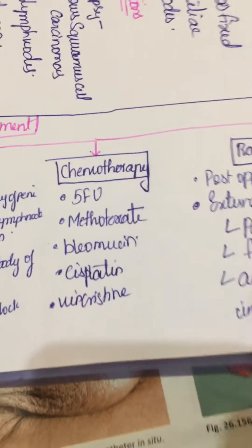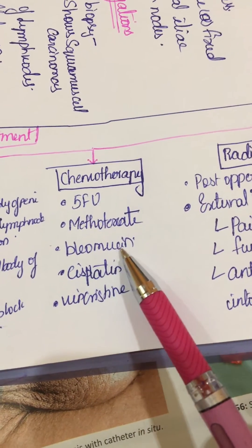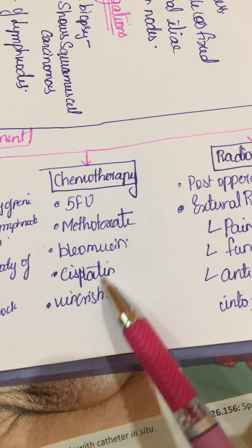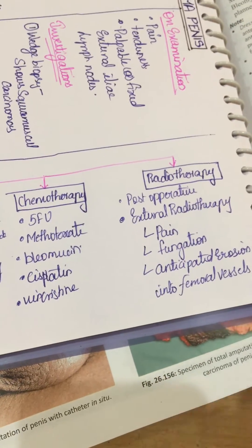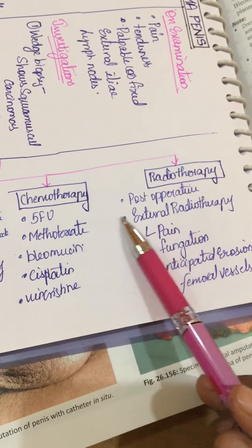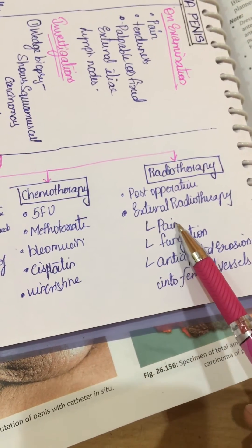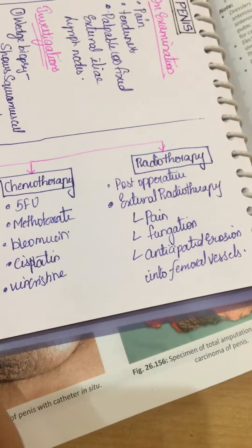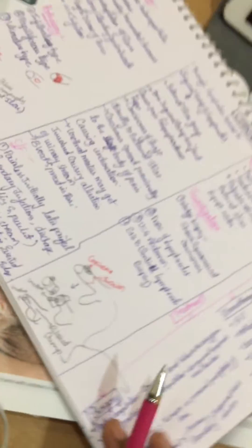If inguinal lymph nodes are involved, chemotherapy with 5-FU, methotrexate, bleomycin, cisplatin, and vincristine is used. Radiotherapy is given post-operatively as external radiotherapy for pain, fungating mass, and anticipated erosion of the femoral vessels.